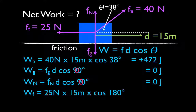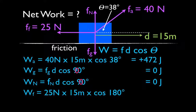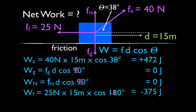What about the friction force? The friction force acts opposite the direction of motion, and therefore the angle between the displacement and the friction force — theta — is 180 degrees. So the force is 25, the distance is 15, the cosine of 180 is negative 1, and that means that the friction force does minus 375 joules of work on the object.